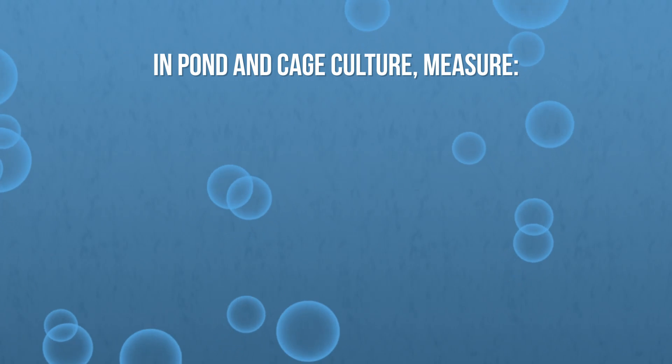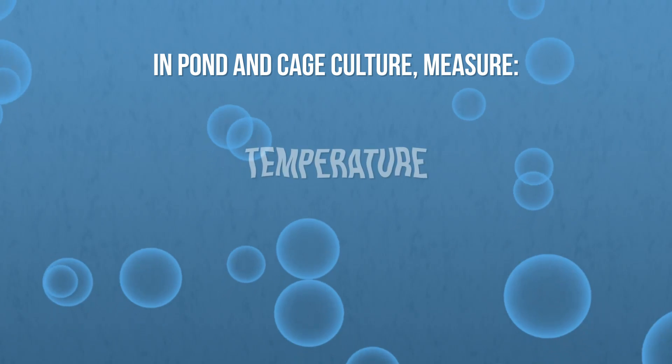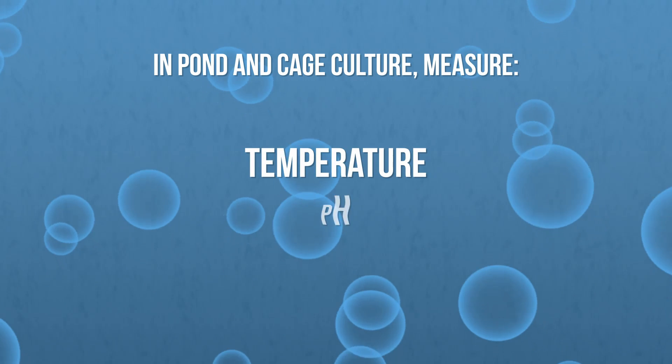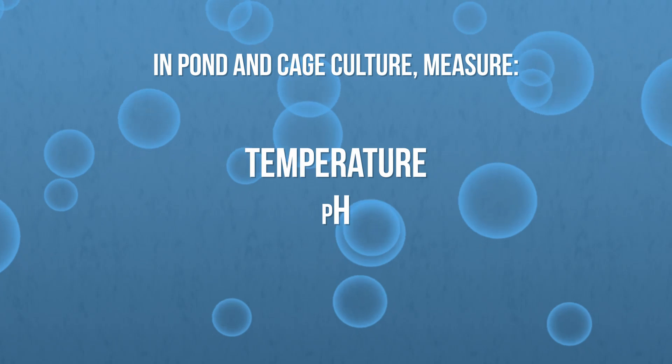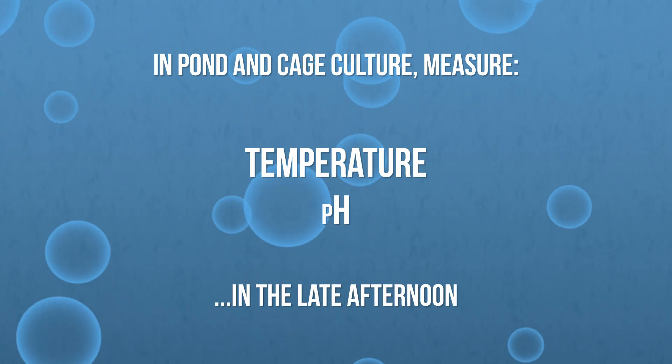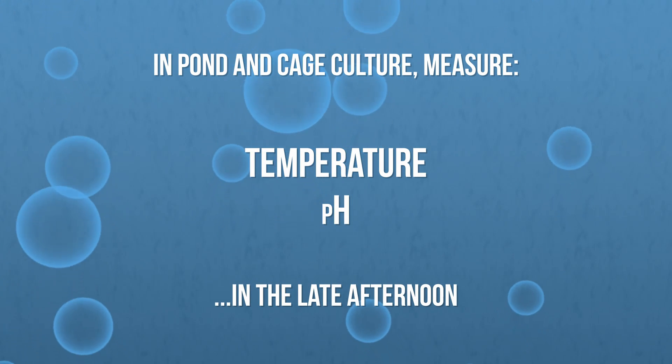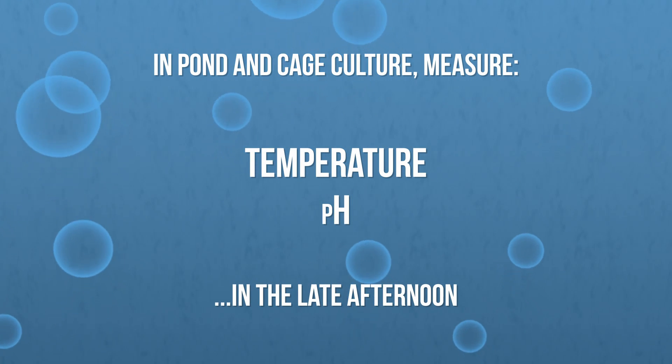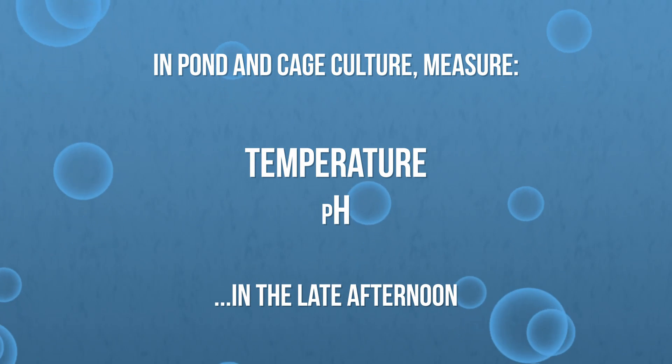Conversely, temperature and pH in ponds are best measured during the late afternoon, when they are both at their highest and have the most negative impact on the fish.